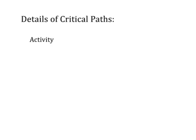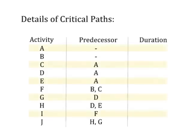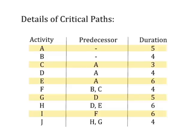When you're using the Critical Path Method, you need three pieces of information: activity, predecessor, and duration. You need to have the activities listed, you need to know which activities are predecessors to other activities, and then you need to know the time that each duration will take. In this instance, we're going to use weeks as our unit of time.